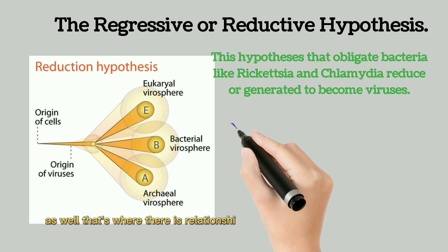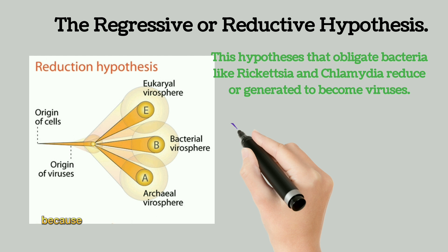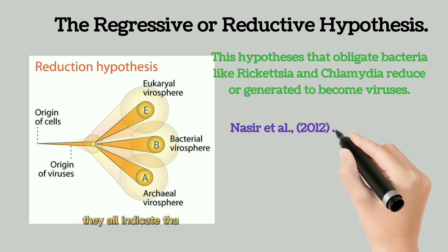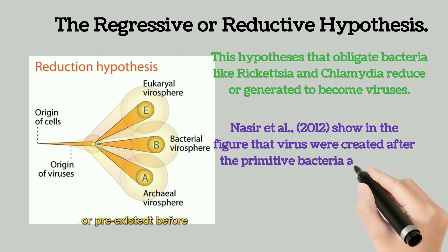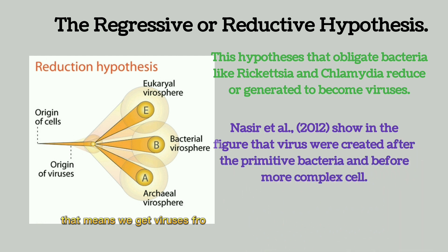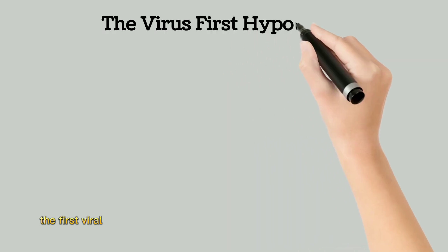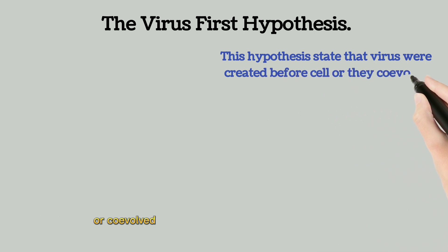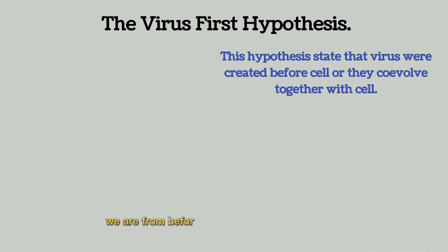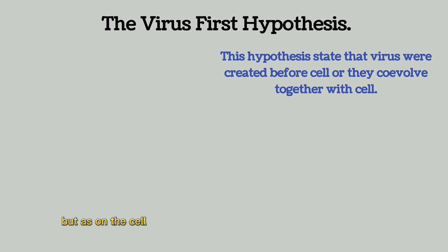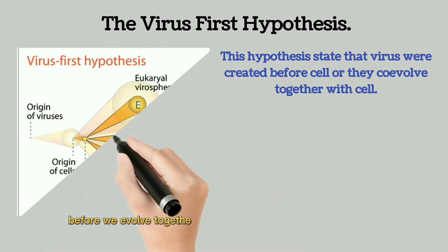That's where there is a relationship between the progressive and regressive hypotheses. Both the progressive and regressive hypotheses indicate that cells predate or pre-existed before viruses — meaning we get viruses from those bacterial cells. The virus first hypothesis, however, states that viruses predate or co-evolved, meaning viruses were formed before cells or they existed together with the occurring cellular host.